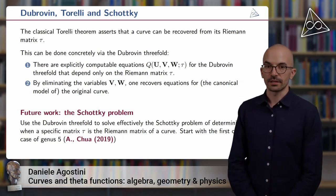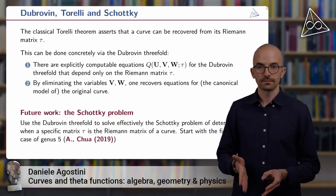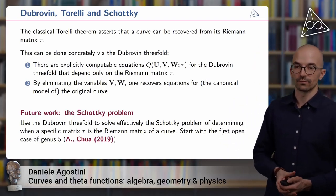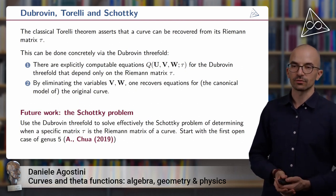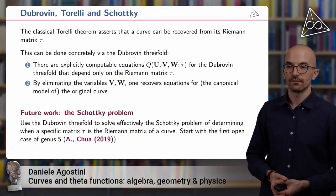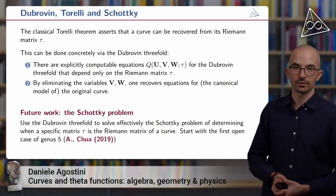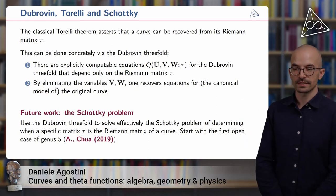Then another fact is that if you project the Dubrovin threefold onto the space of u coordinates, you will recover a canonical model of the curve you started from. In other words, if we carry out the completely algebraic procedure of eliminating the variables v and w from the equations of the previous point, we will get the equation for the canonical model of the original curve. So from the matrix tau, we recovered our original curve C.